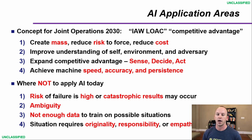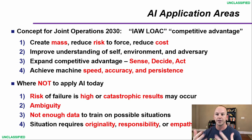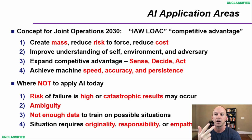Where we're NOT trying to apply AI is anywhere that the risk of failure is high or the strategic consequences could be catastrophic. Anywhere there's ambiguity — I see this action, I'm not sure if it means this or something else; human heuristics might tell that very easily, but potentially not computers. Anywhere there's not enough data yet — collect more first. And anywhere that's core creativity, originality, responsibility, and empathy, where right now machines are not better than humans holistically.